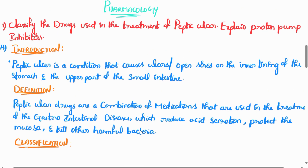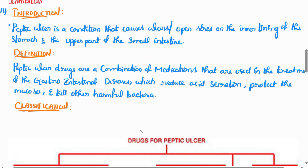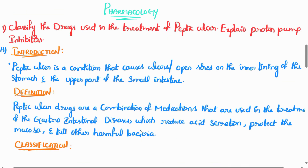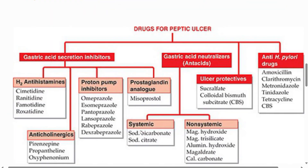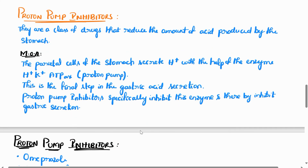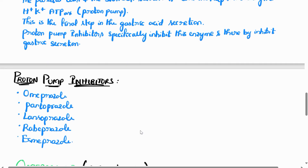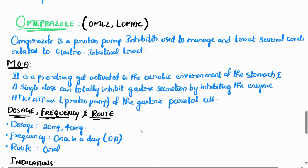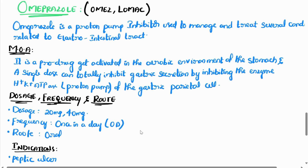In conclusion, for a disease-related drug question, you start with the definition of the disease, then introduce the classification. You present the classification with a main heading, sub-headings, and list the drugs under each sub-heading horizontally or vertically. Then you add the mechanism of action, followed by any specific drugs included under that sub-heading.